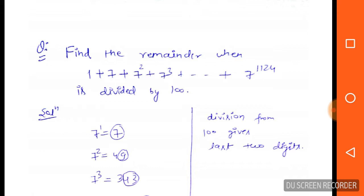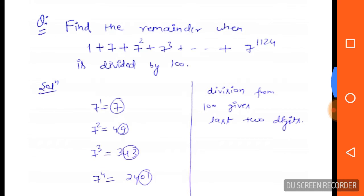remainder when 1 + 7 + 7² + 7³ + ... + 7^1124 is divided by 100. So what will be the remainder when it is divided by 100?